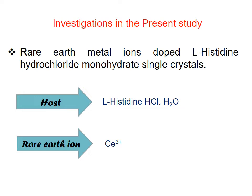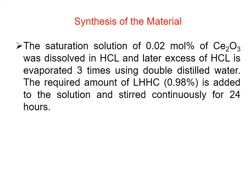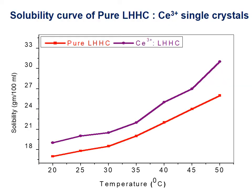In the present study, the host material is L-histidine hydrochloride monohydrate and the rare-earth ion is CE3+. For synthesis, a saturation solution of 0.02 mol percent of Ce2O3 was dissolved in hydrochloric acid; excess hydrochloric acid was evaporated three times using double distilled water. Then 0.98 mol percent of L-HHC was added and stirred continuously for 24 hours. The solubility curve shows that as temperature increases, solubility increases for both pure and CE3+ ion-doped crystals, with the doped crystal showing greater increase.